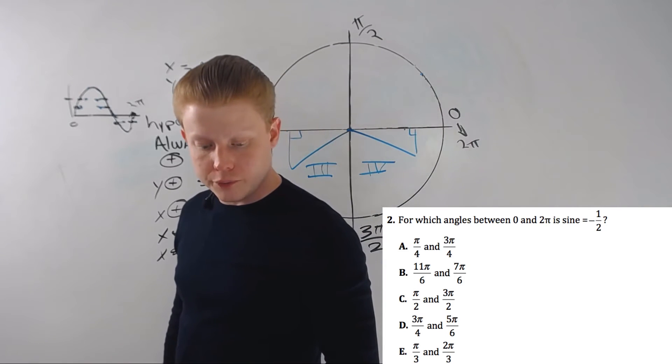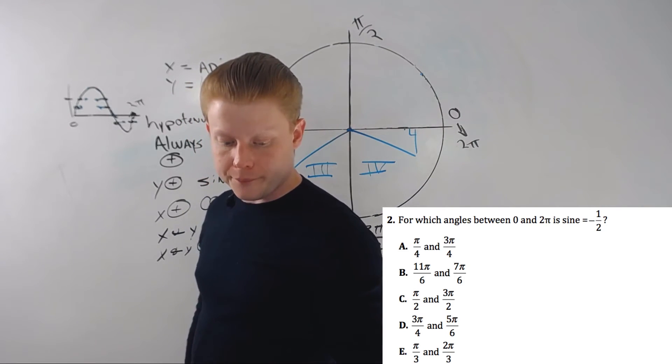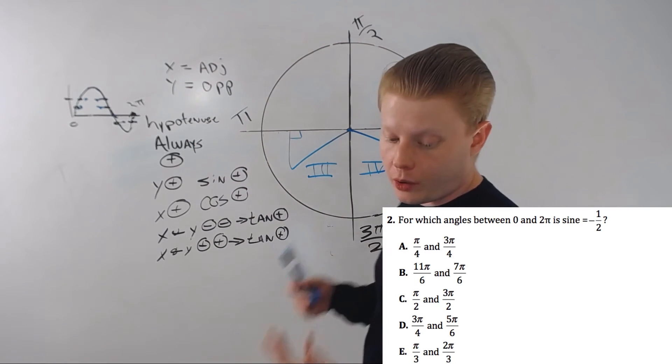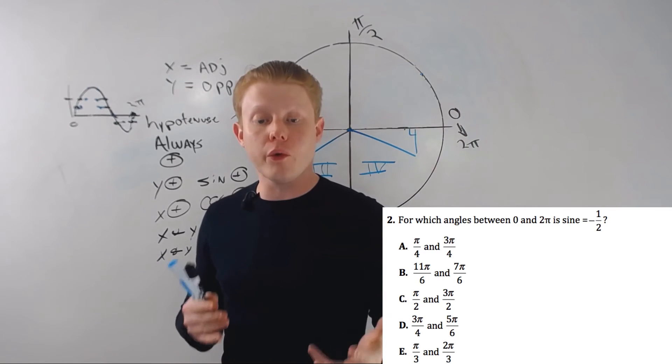And pi over 3 and 2 pi over 3. Again, both positive. So by marking off, B is the only one that's left.